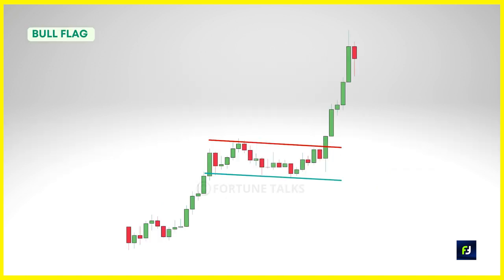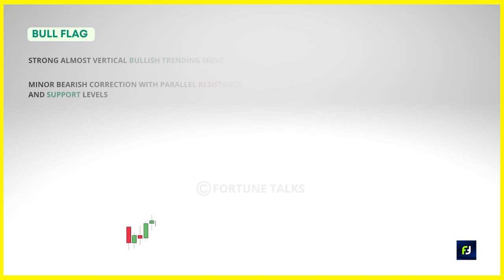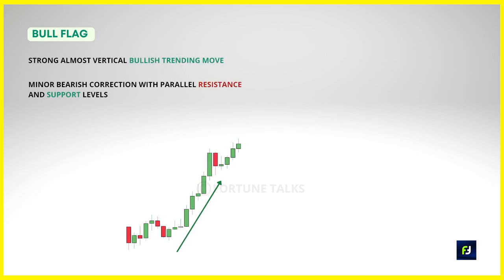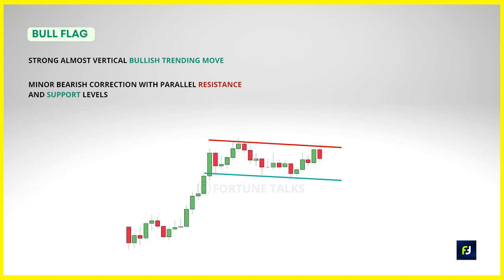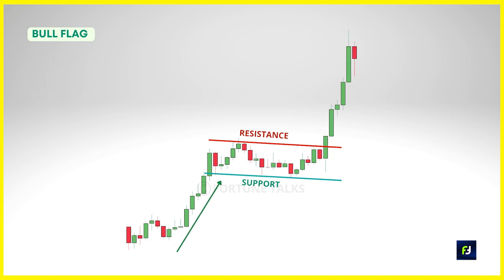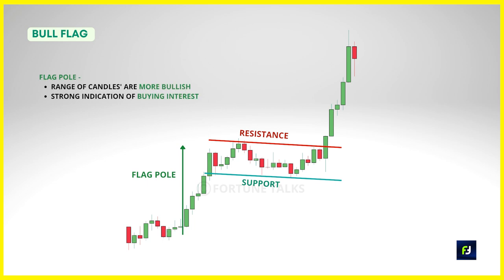The bullish flag, or bull flag, forms during a bullish trend. It starts with a strong, almost vertical bullish trending move, which then stabilizes and turns into a minor bearish correction with parallel tops and bottoms representing important support and resistance levels. There are three components to any flag pattern. To correctly identify a bull flag, look for a preceding uptrend that forms a flagpole. The candles' range is more bullish than usual and they tend to close near the highs, signaling strong buying interest and bulls dominating the market.